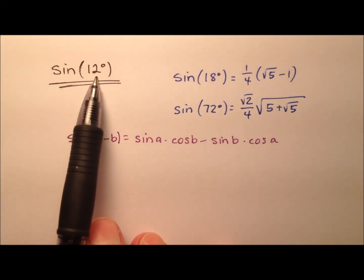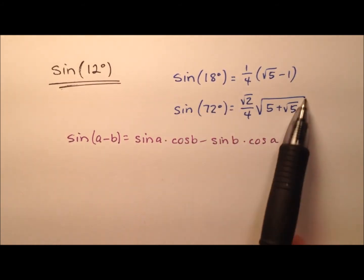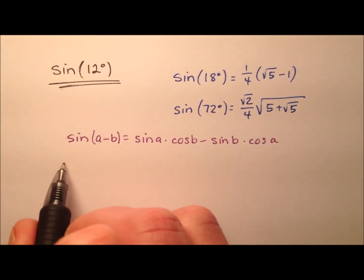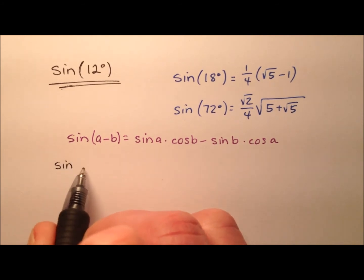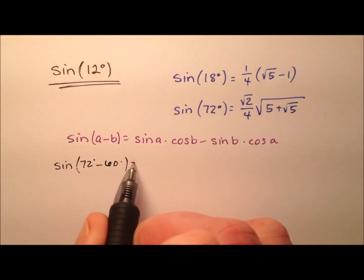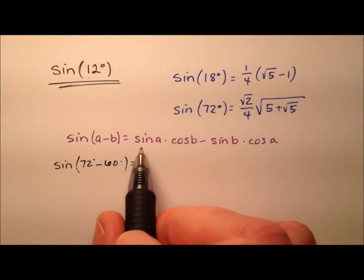So the sine of 12 degrees is going to piggyback on this work that's already been done. Let's go ahead and use this difference formula, and we'll use the sine of 72 degrees minus 60 degrees, because 72 minus 60, that's our 12 right there.